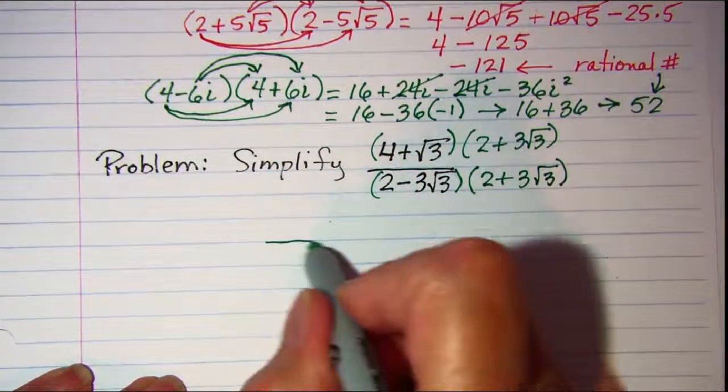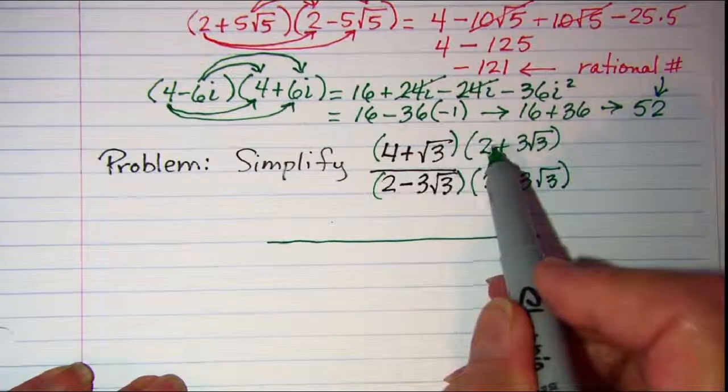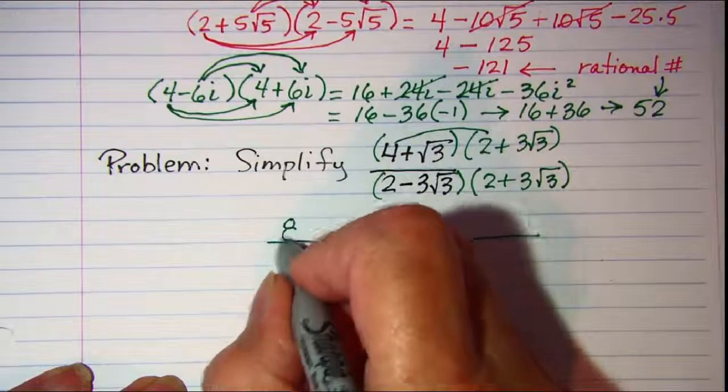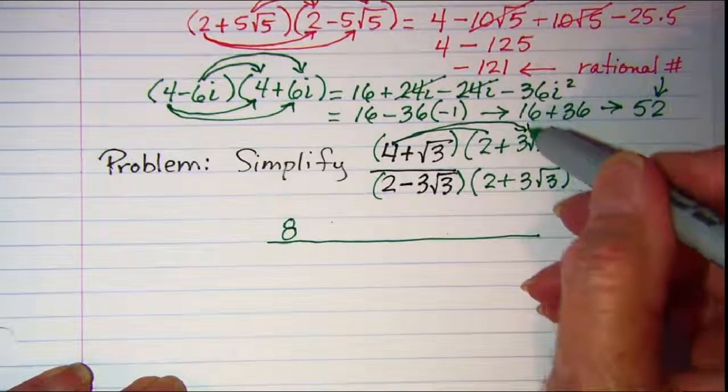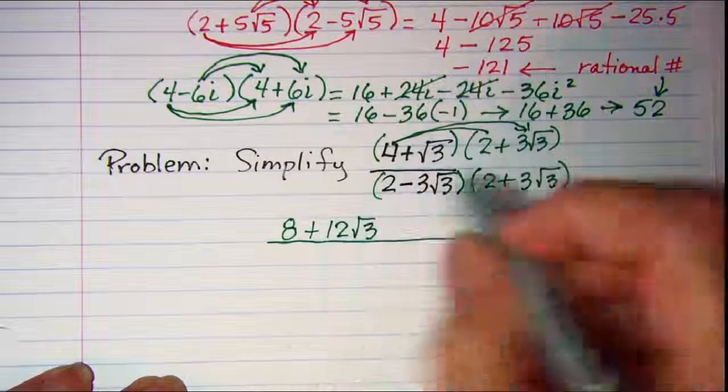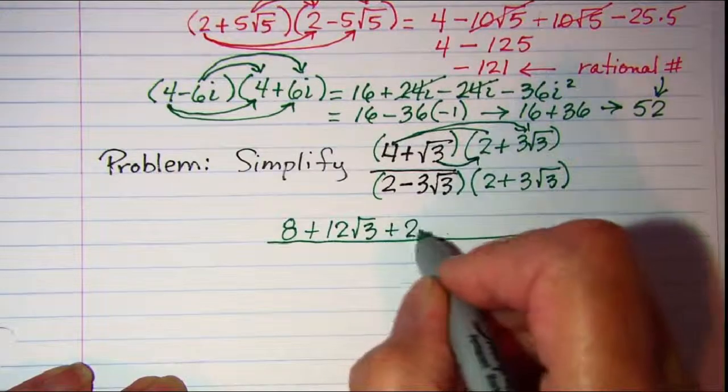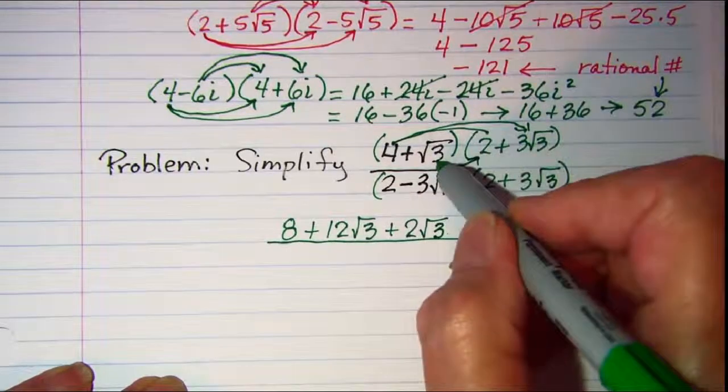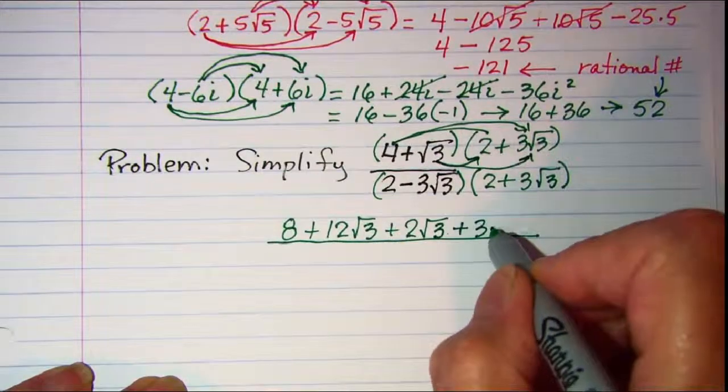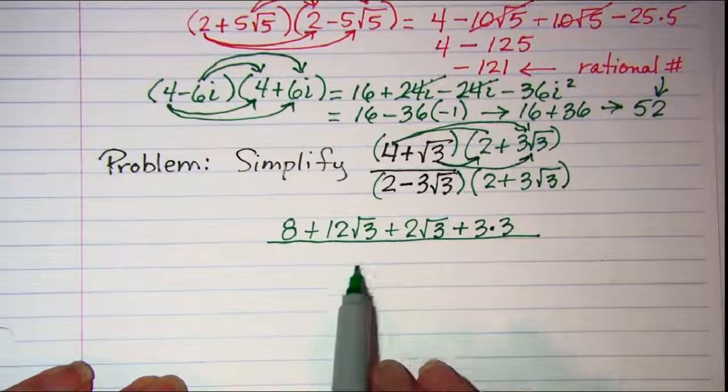So this process is a little time consuming but not difficult at all. We're going to use FOIL in the numerator here. 4 times 2 is 8. 4 times 3 root 3 is 12 root 3. And then root 3 times 2 is 2 root 3. And then root 3 times 3 root 3 is 3 times 3.